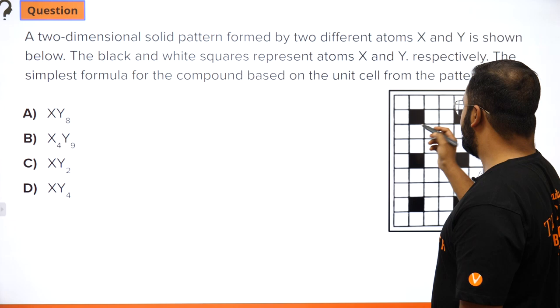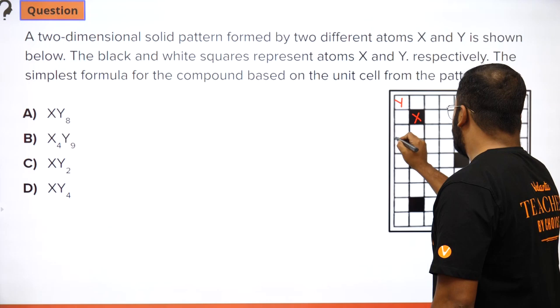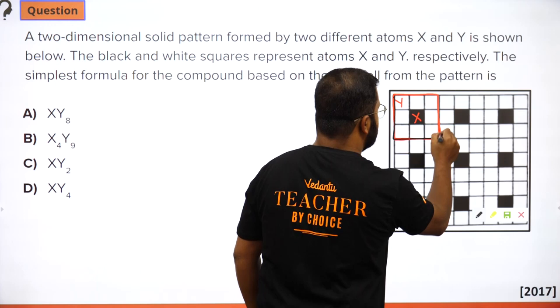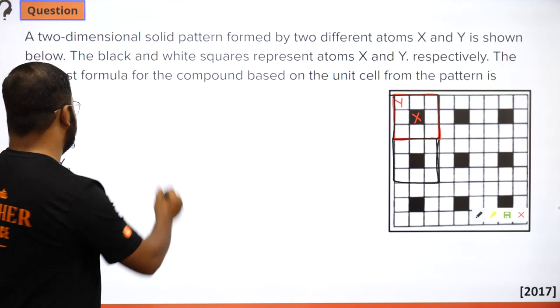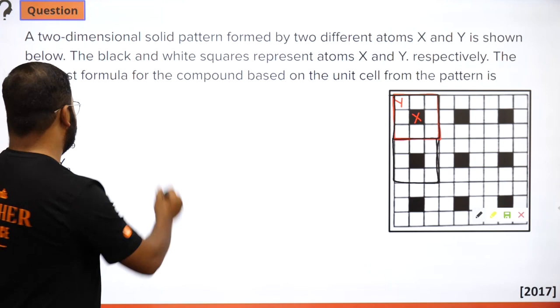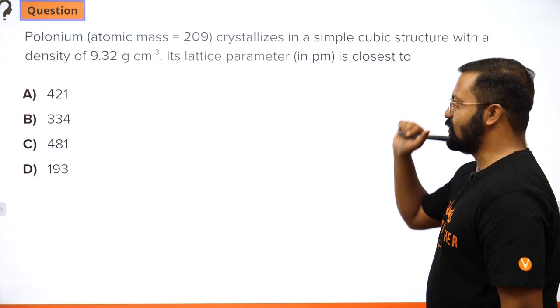Next question: atoms X (black) and Y (white) form a 2D structure. Identify the repeating unit. The small repeating part contains 1 X atom and 8 Y atoms. So the formula is XY₈. Easy question.